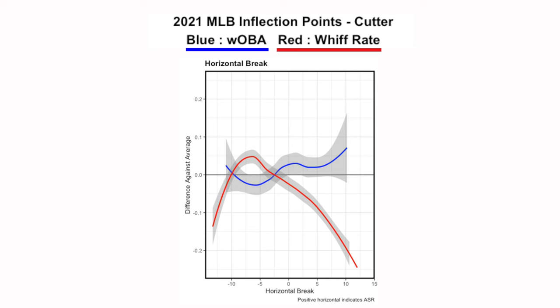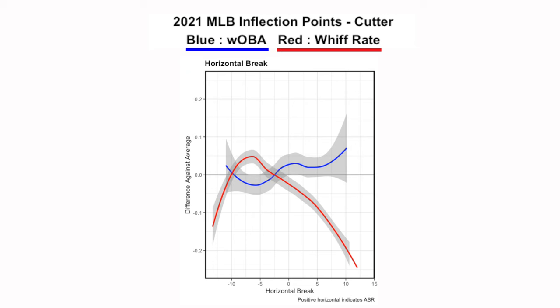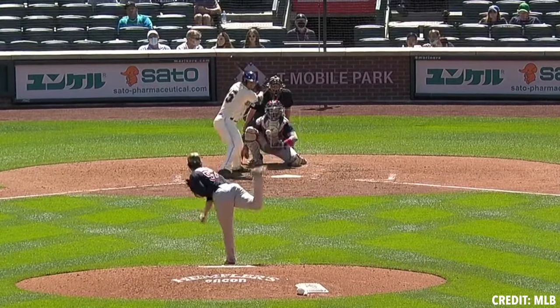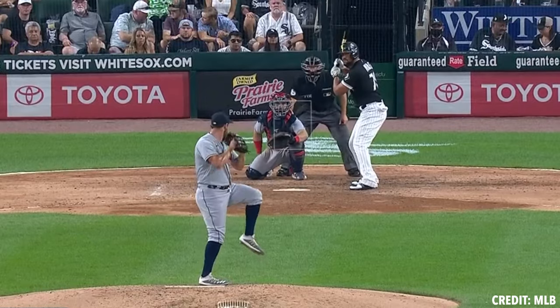Looking at horizontal break — this is another one along with velocity that really stands out in terms of setting the baseline parameters for what a cutter needs to be. You can see whiff rate go down when getting to the right of that zero line. For a right-handed pitcher, those are cutters that don't get enough glove-side movement — they're backing up straight. Whiff rates go down and WOBA goes up. So the floor for a cutter is: throw it as hard as possible and get it to the zero line or further horizontally. Those are the two musts.